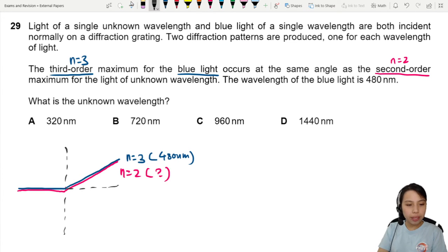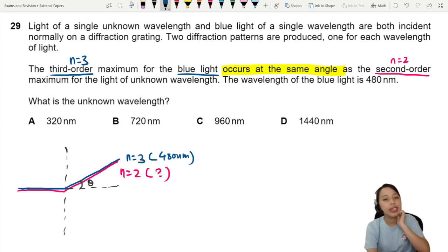And they both are at the same angle because they overlap. That's how we can tell from this line occurs at the same angle. So what's the unknown wavelength? If you're not sure where to start, we gotta start with the equation.